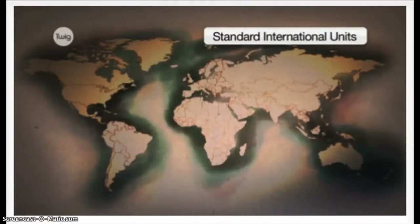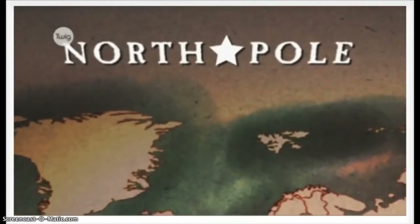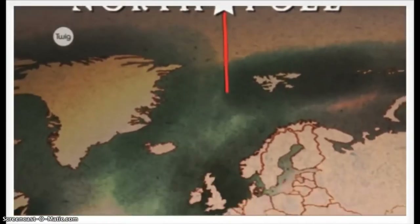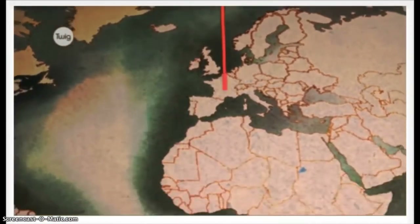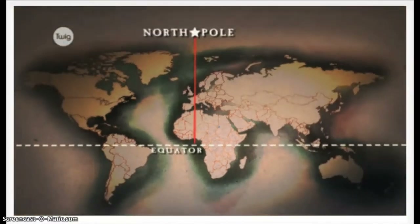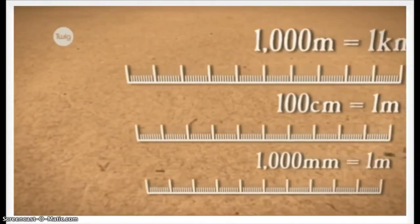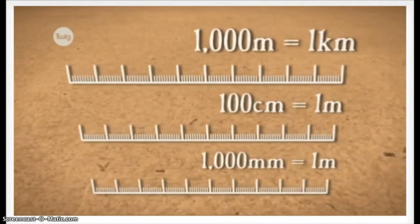It was decided that the meter should be a length that was the same the whole world over. A meter would be one ten-millionth of the distance from the North Pole to the equator. This was calculated using trigonometry, and an official meter bar was created in Paris in 1795. Using the decimal system, other lengths could be calculated simply from the new meter.